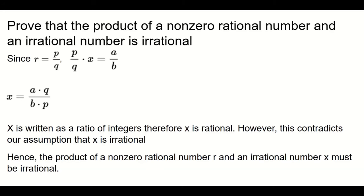And then we get X equals A times Q over B times P. And here X is written as a ratio of integers. So A, B, P, and Q are all integers. And when you multiply integers, you still get an integer. So it's basically an integer over an integer, which means that X has to be rational. But that contradicts our assumption that X was irrational.